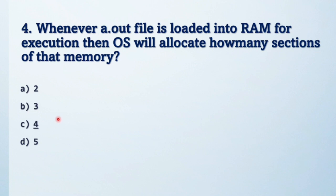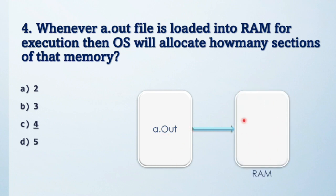Answer is four. Why four? Whenever a.out file is loaded after compilation into RAM, in that RAM this file, OS will allocate four sections: stack section, heap section, data section, and code section. I hope you already know these four sections. This is very important. So a.out file divided into these four sections in the RAM.